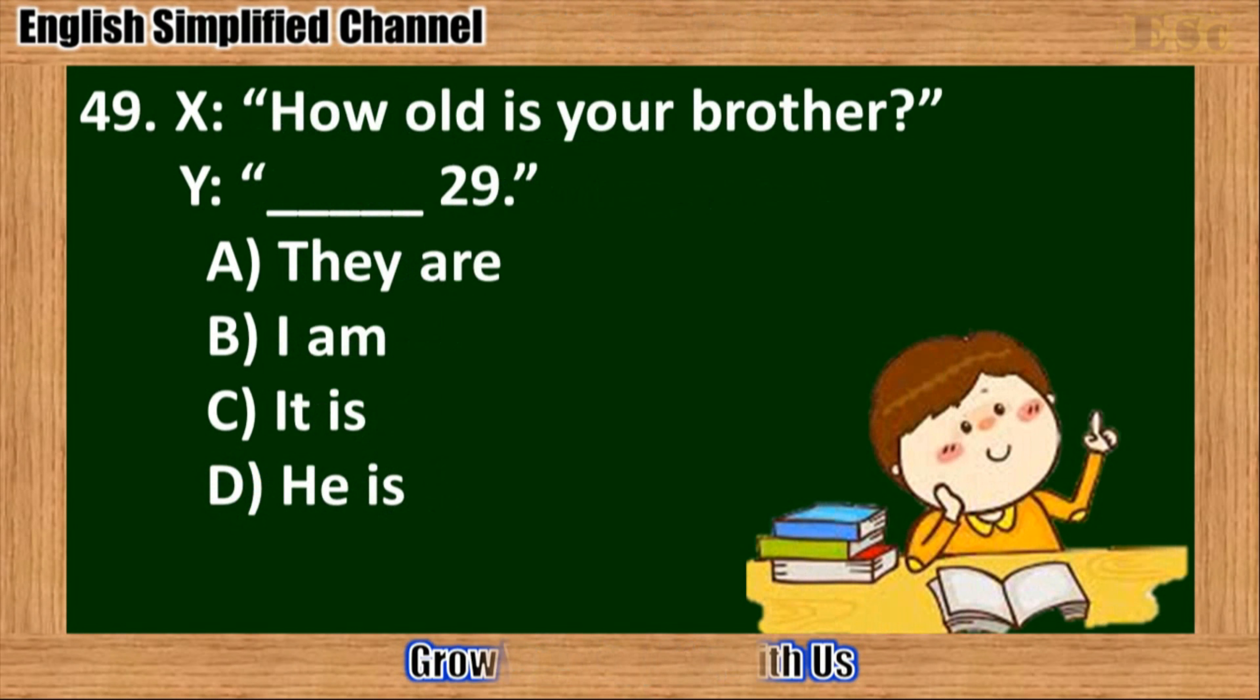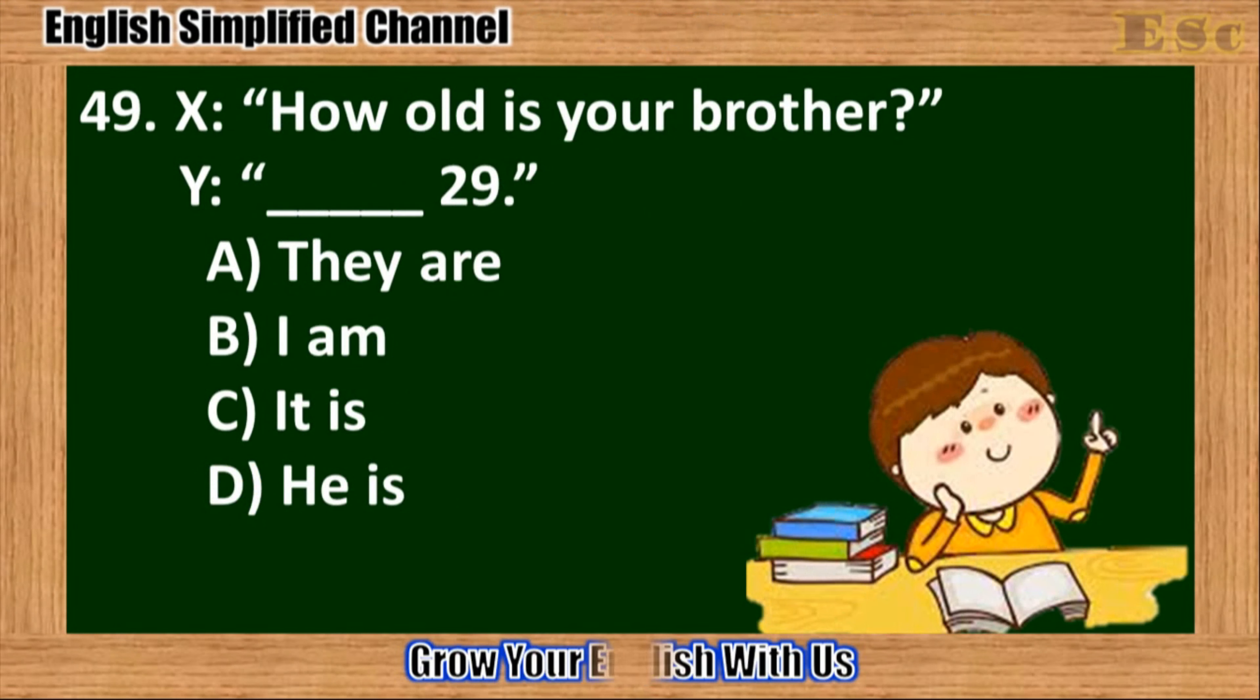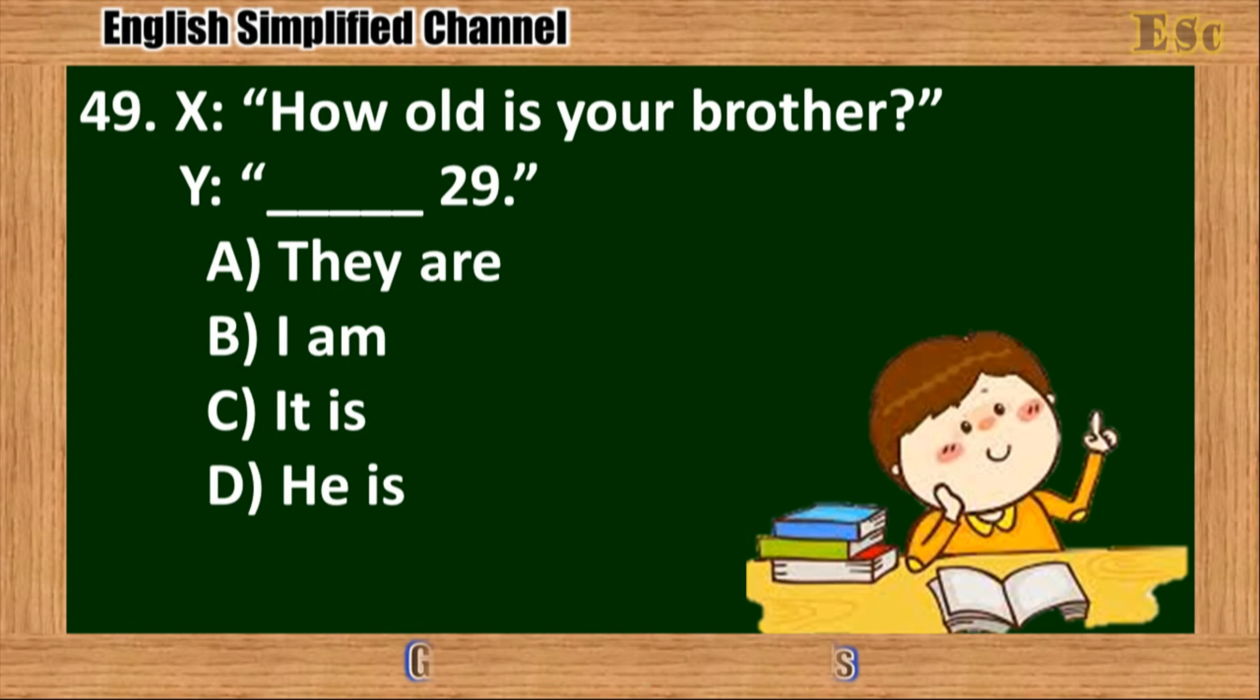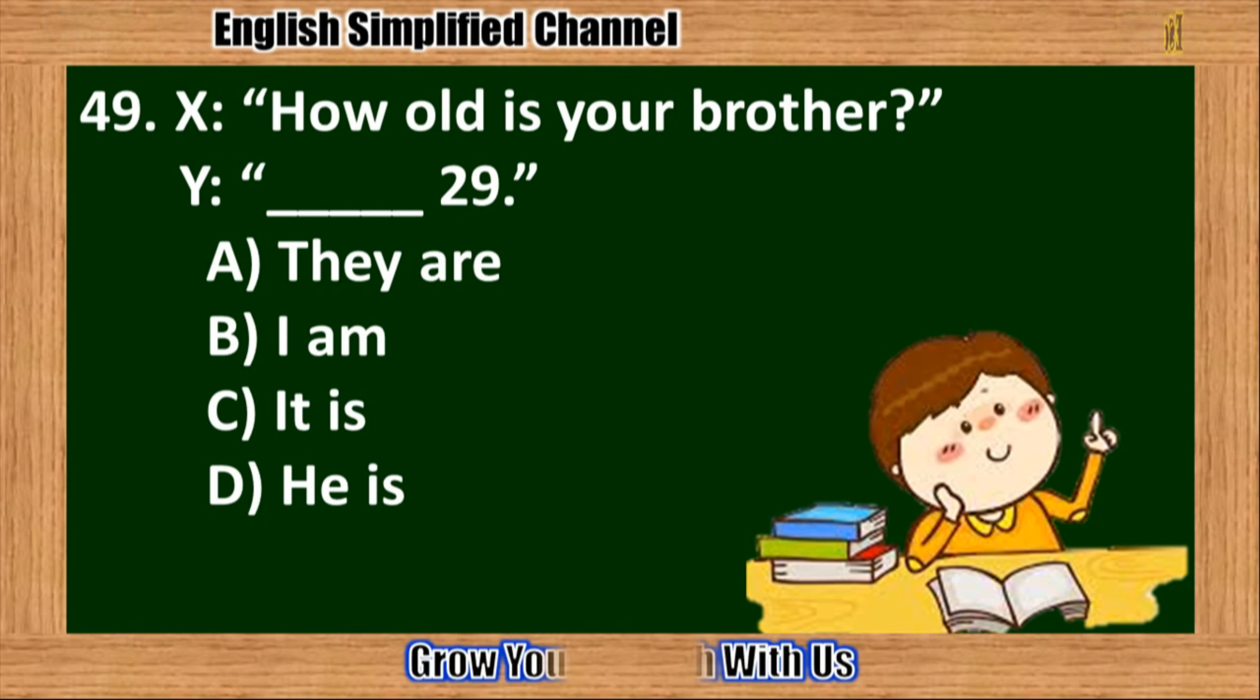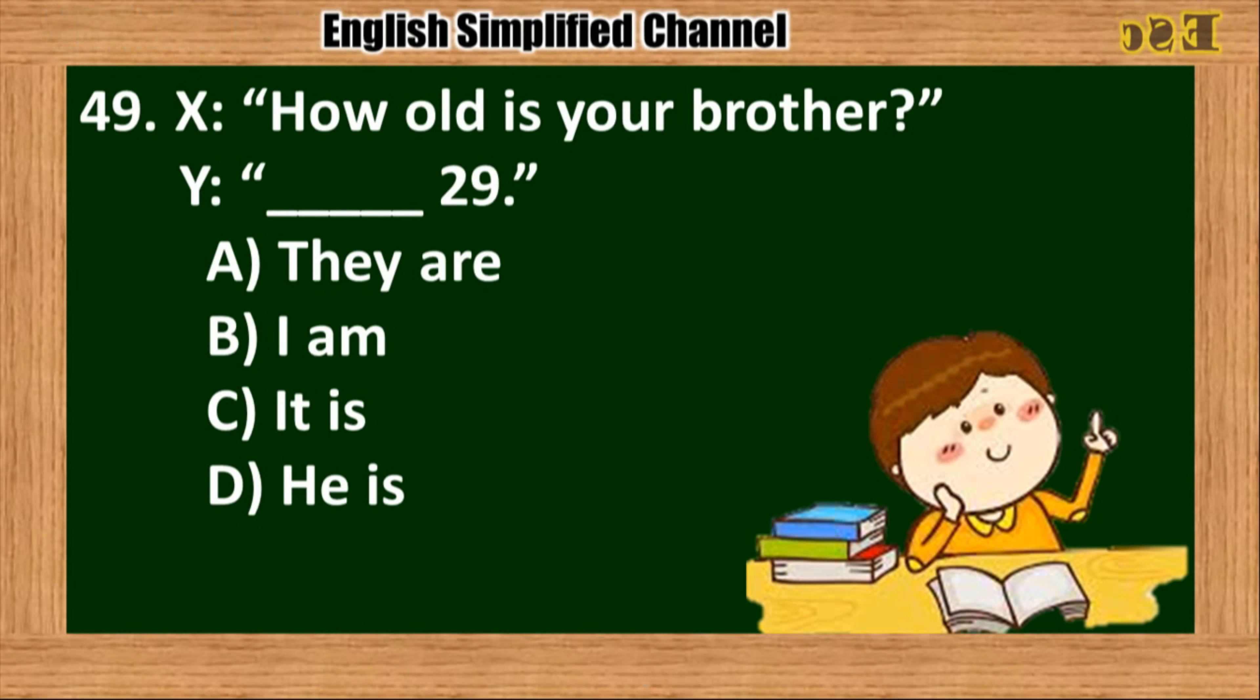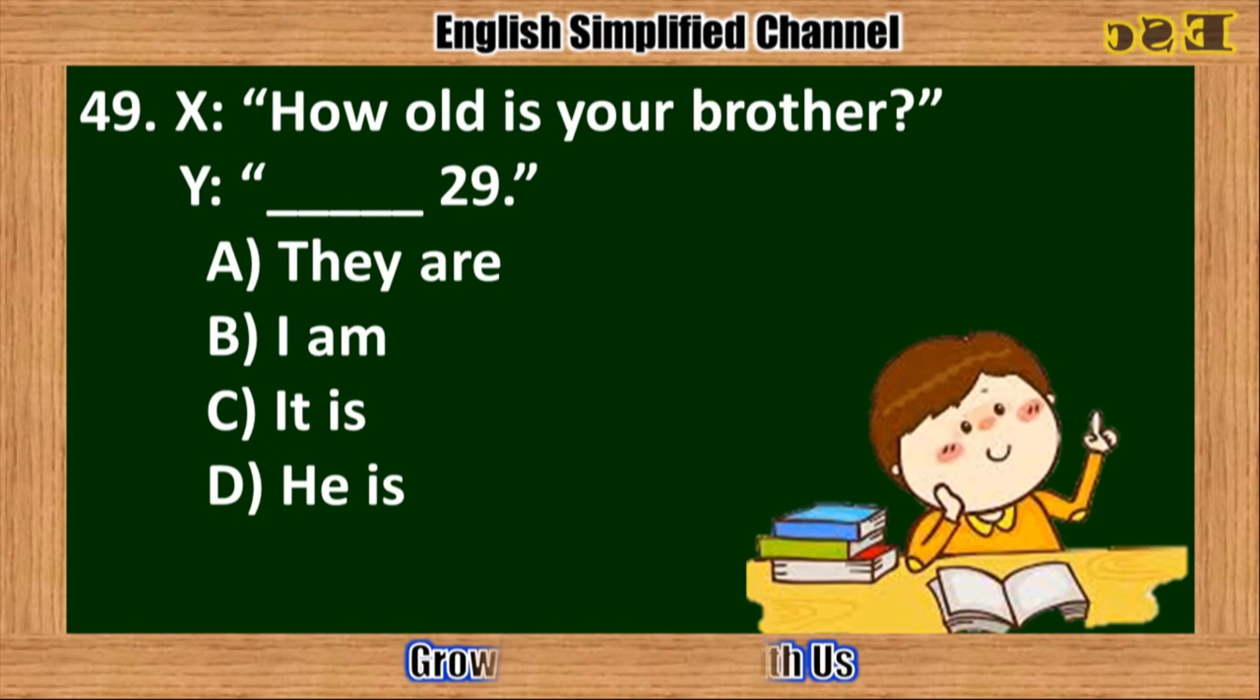49. How old is your brother? Blank 29. A. They are. B. I am. C. It is. D. He is.